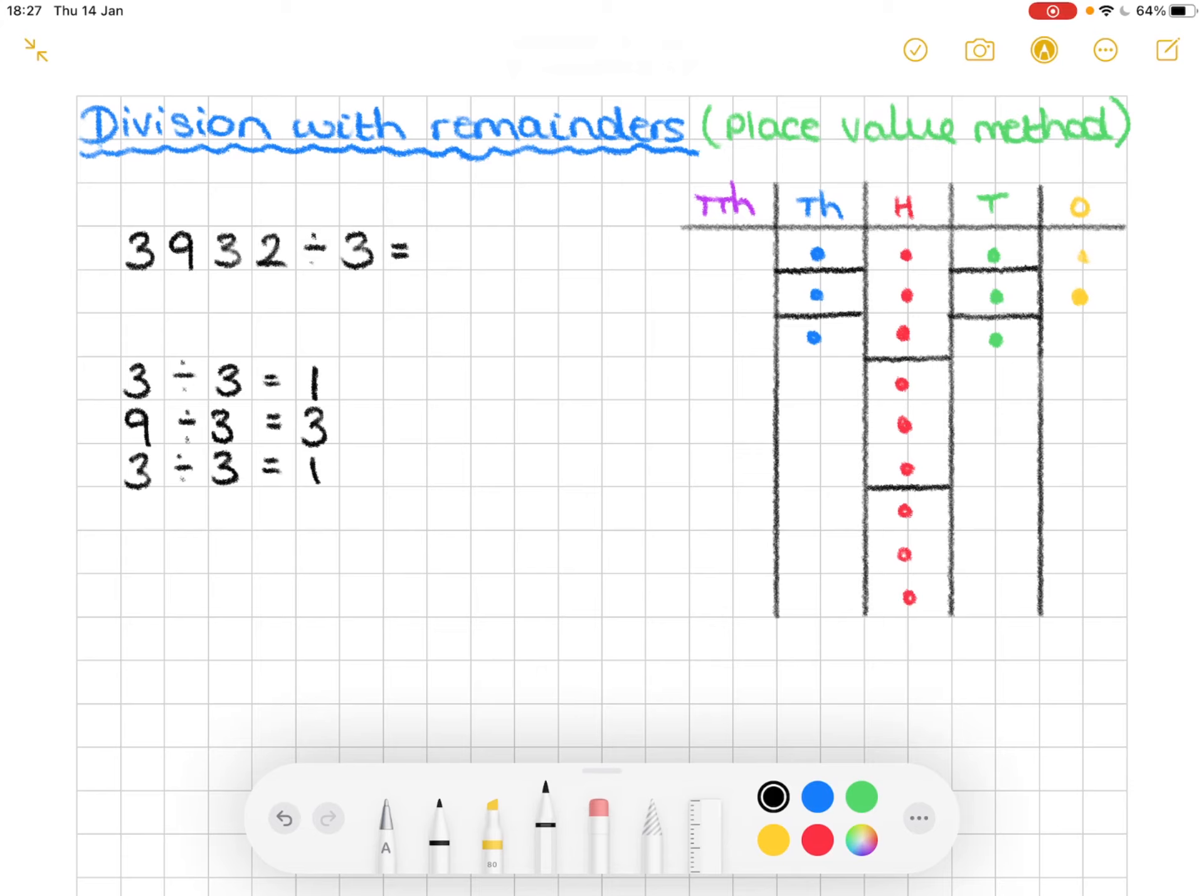And finally, we come to the ones column. And there is just two in the ones column. Divide that by three. Now we can't do two divided by three because three is greater than two. Okay, so I'm just going to put a question mark there. And that tells me I can't do this.